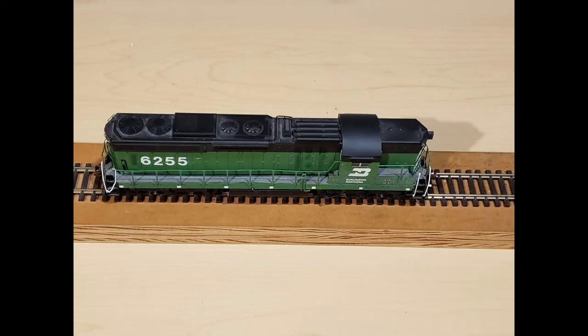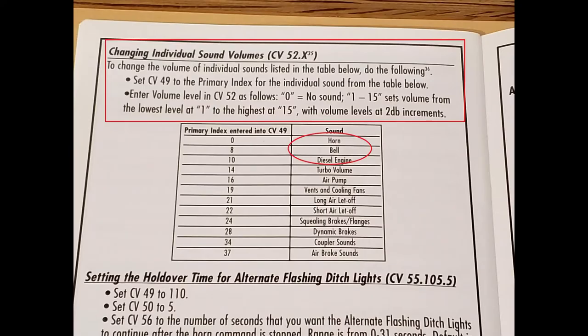Next up is my Atlas SD24. Now, this is one of the more complex ones, but it's not that hard once you figure it out. So I've highlighted here in this picture how it's done. So basically what it says is to change the volume of individual sounds listed in the table below, do the following. So first, you set CV49 to the primary index. Now the primary index is the sounds I have circled below, which is your, in this case, the horn, the bell, or the diesel engine.